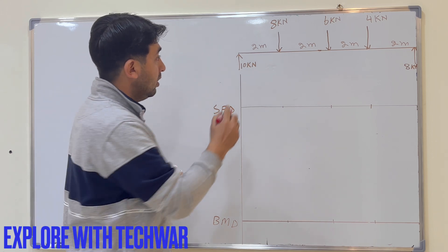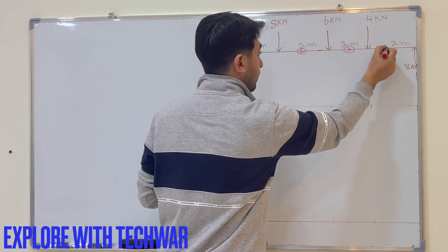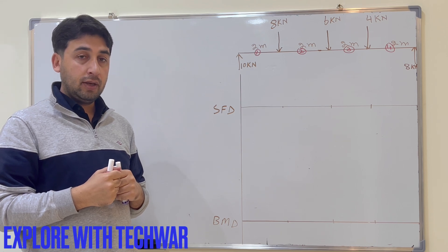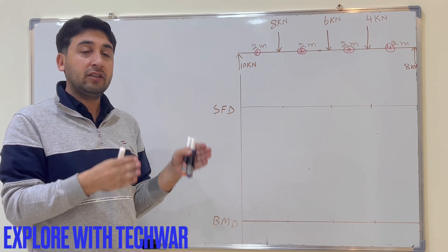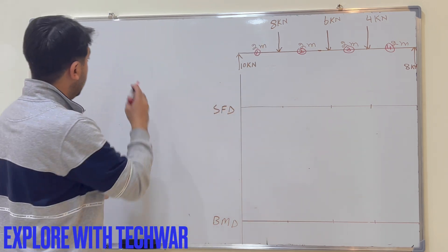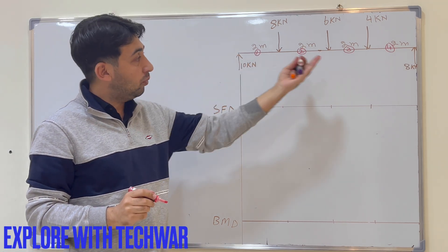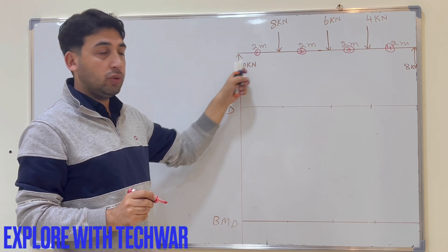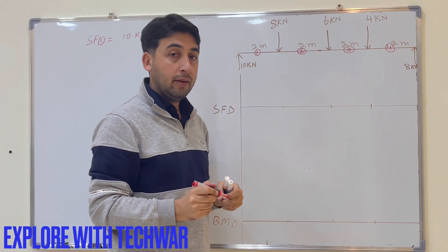We will find the shear force at four sections of the beam. As explained in the previous video, the shear force at any section is the sum of external forces acting on either side of that section. For all sections we will take the left side. At section one, only one force acts on the left side: 10 kN. So shear force at section one is 10 kN.